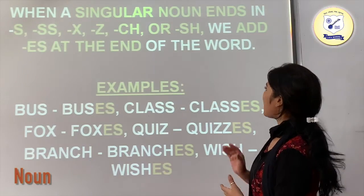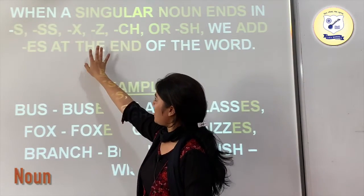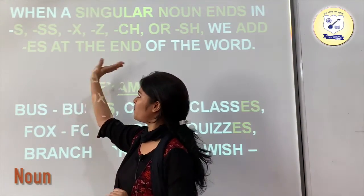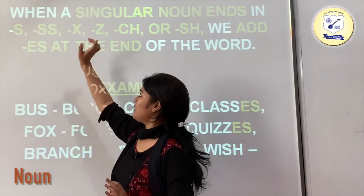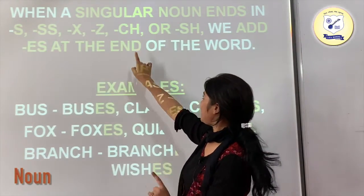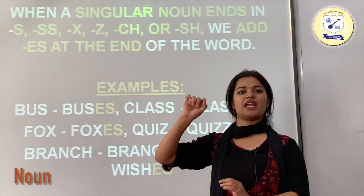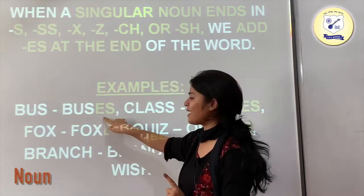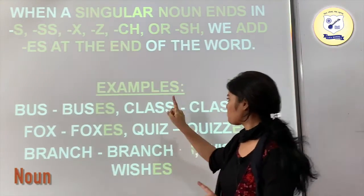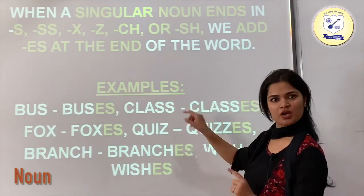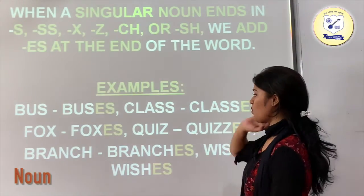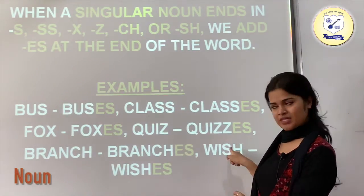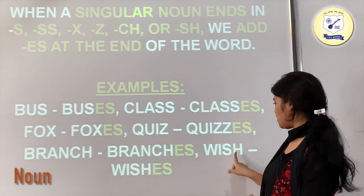When a singular noun ends in s, ss, x, z, ch or sh, we add 'es' at the end of that word. For example: bus ends with s, so we add es — buses. Class has double s, so we add es — classes. Fox ends with x, so we add es — foxes. Quiz is converted into quizzes. Branch is converted into branches. Wish is converted into wishes.